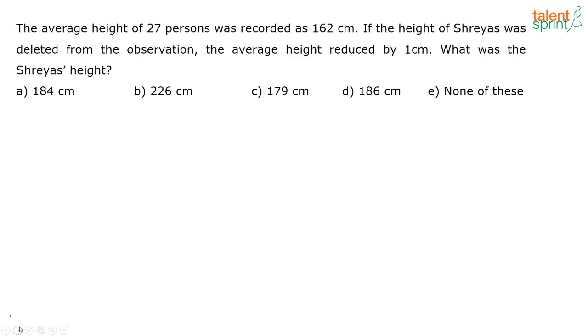The traditional way to solve this: You have 27 people whose average height is recorded as 162 cm. What is the total height of all the people? It is 162 × 27, because the average is 162 and there are 27 persons. So the total height is 162 × 27.